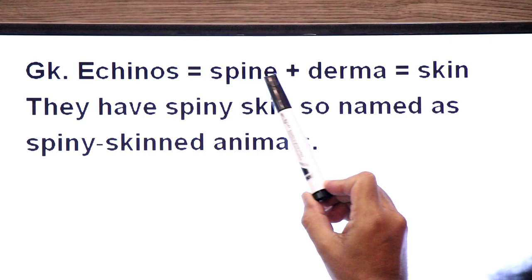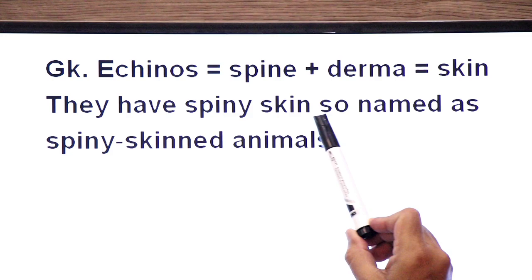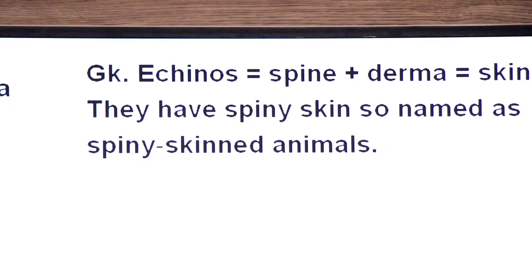It has Greek origin. Echinos means spine, plus derma means skin. They have spiny skin, so they are named spiny skinned animals.